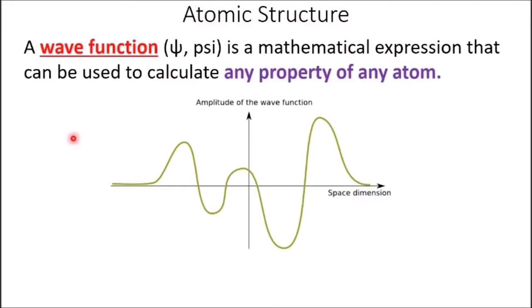Wave functions can be used to calculate average values and probabilities for just about anything. Why do we talk about average probabilities and average distances? It comes down to the Heisenberg uncertainty principle, which says that the more we know about the position of electrons, the less we know about its momentum — which is very much related to energy. In the Schrödinger model, we say we know the energy, so we have to talk about average positions of electrons. The Heisenberg uncertainty principle is really based on the fact that electrons have both particle and wave properties associated with them.